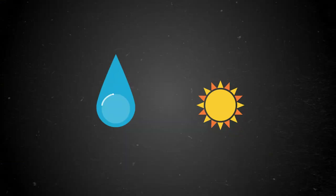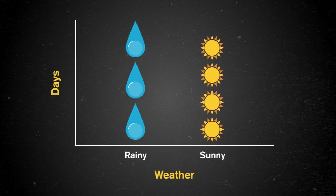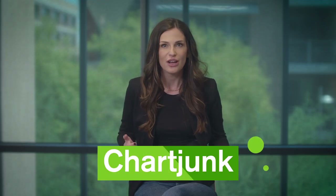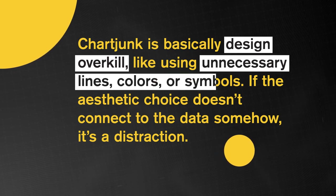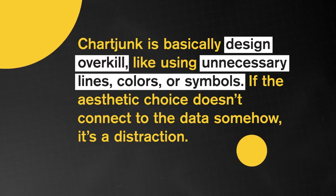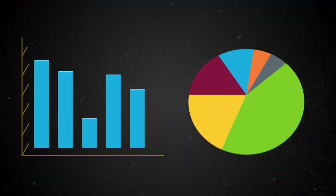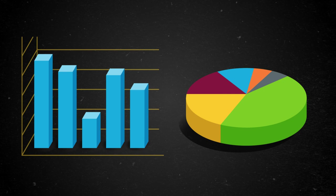Even the simplest graph might not be telling the whole story, so it's important to look carefully at all labels. Even without messing with the chart basics, design choices can get in the way. Cute raindrop and sun icons stacked to make bars are visually appealing, but if the symbols are badly sized, it makes it hard to compare bar heights accurately. Overly complicated aesthetic choices like this are called chart junk — a phrase coined by statistician Edward Tufte in his 1983 book The Visual Display of Quantitative Information. Chart junk is design overkill: unnecessary lines, colors, or symbols that don't connect to the data. A common culprit is throwing in an extra dimension — 3D bar or pie charts are rarely necessary.